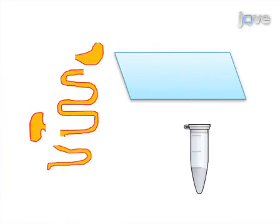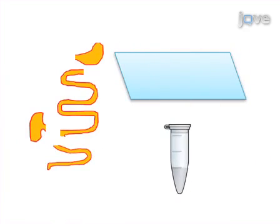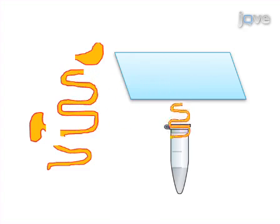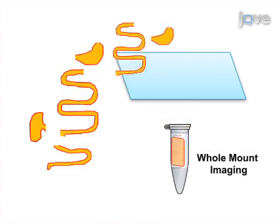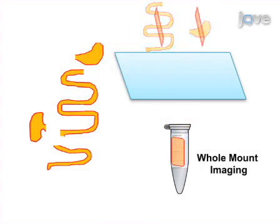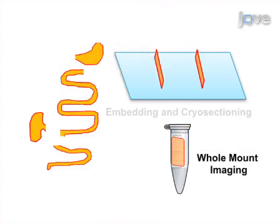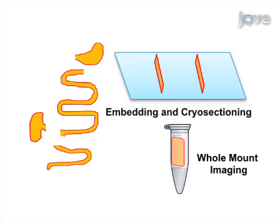Next, each part of the GI tract is fixed, either in acetone followed by mucosal removal for whole-mount imaging, or in paraformaldehyde followed by embedding and cryosectioning for cross-sectional imaging.